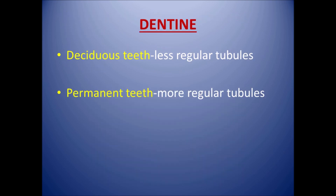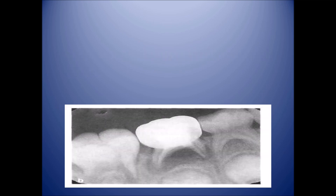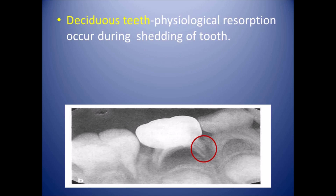Moving on to dentine, permanent teeth have more regular dentinal tubules as compared to deciduous teeth. In deciduous teeth, interglobular dentine is absent, but in permanent teeth interglobular dentine is present. In deciduous dentition, physiological resorption occurs during shedding of the tooth so that it is replaced by permanent dentition. But in permanent teeth, there is no physiological resorption.